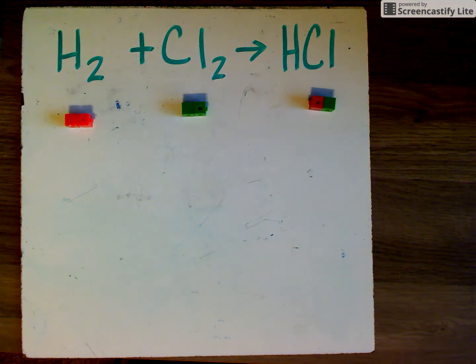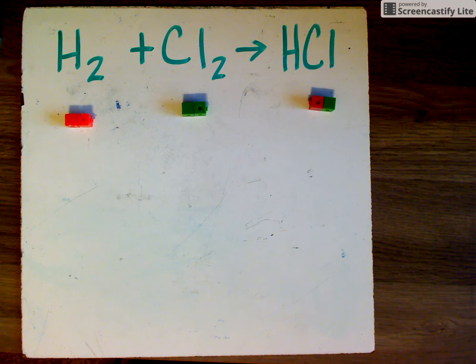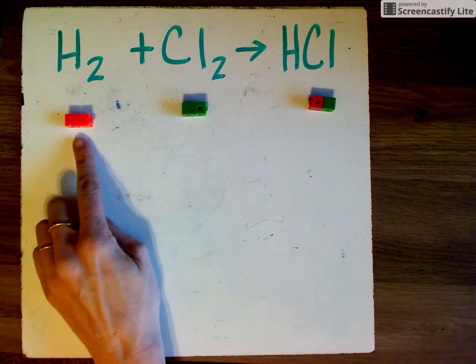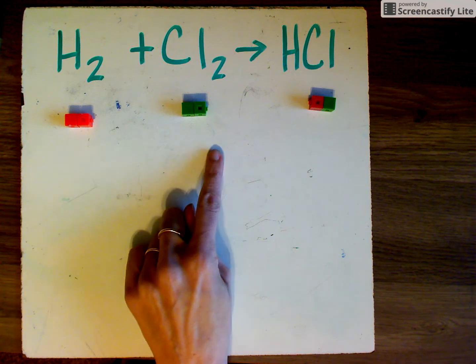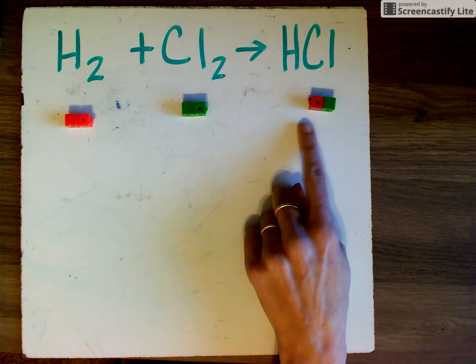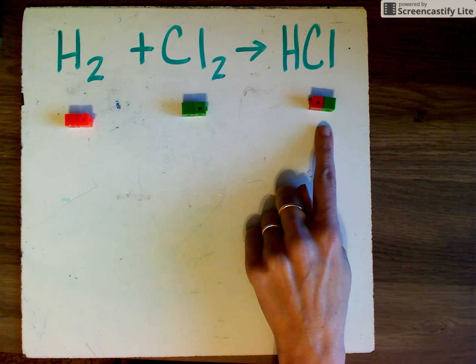If we were just doing the word formula of hydrogen and chlorine react to make HCl, that'd be fine. But since we're trying to write a chemical equation for it, we've got to make sure that it's balanced, that it's a complete formula. In this case, it's not because in the reactants, I have two of each compound. But over here, I'm missing some cubes.